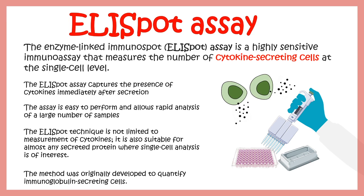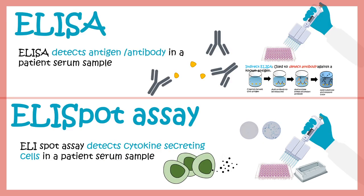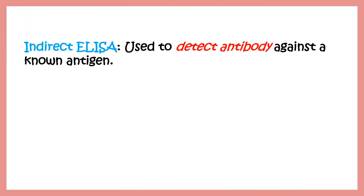ELISPOT assay is very similar to ELISA. Both share the principle of antigen-antibody interaction. ELISA detects antigen or antibody in a patient serum or plasma sample, whereas ELISPOT determines cytokine-secreting cell types present in a patient sample. This is the major difference between the two. ELISPOT is essentially a modified ELISA, so understanding ELISA's principle is important before proceeding to ELISPOT.